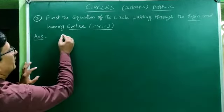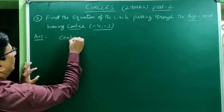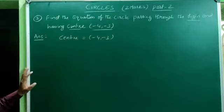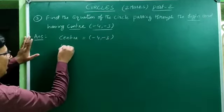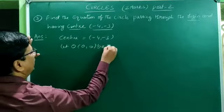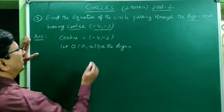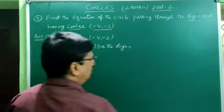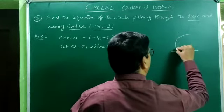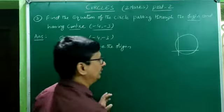Given: center = (−4, −3). Let O = (0, 0) be the origin. Passing through the origin means one of the points on the circle is the origin.